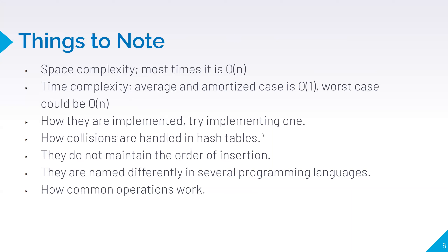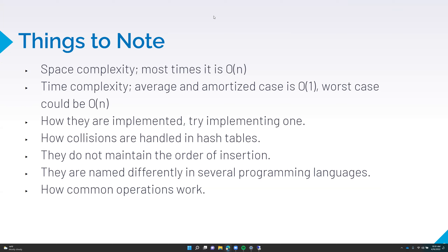Hash maps, hash tables, and hash sets are called different things in different programming languages, so you need to know what it's called in your language. I use C# a lot, and hash maps are called dictionaries in C#. Hash sets are called sets in C#. What is it called in your language?